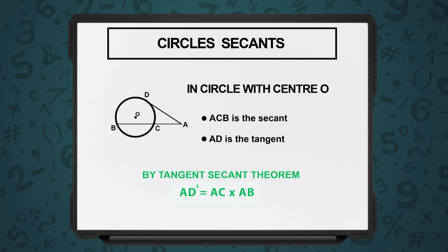On the other side, I draw a secant ACB — the same external point A. It first touches the circle in C, then touches the circle in B.